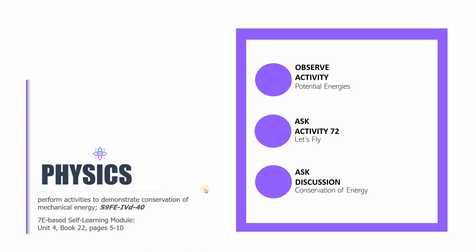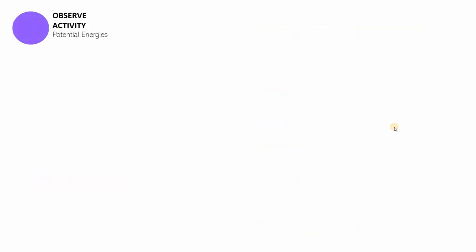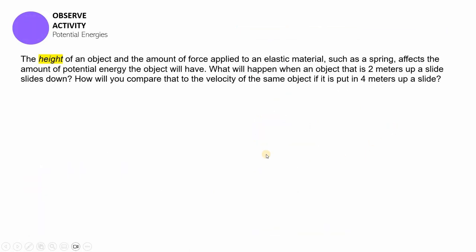We are going to be looking at the potential energies from a new light. Remember that height — the height of an object — and the amount of force applied on an elastic material such as a spring: these two, the height and the amount of force, affect the amount of potential energy that an object has. In terms of gravitational potential energy,